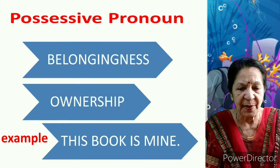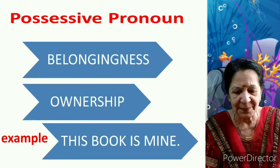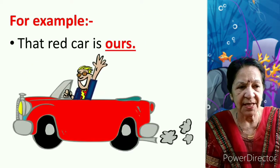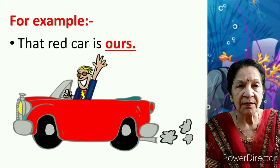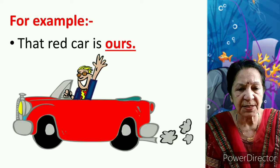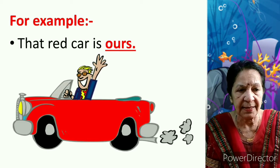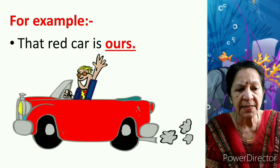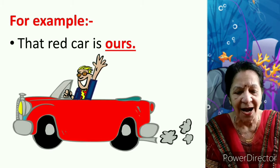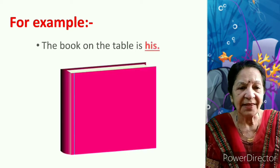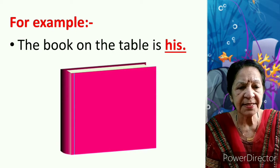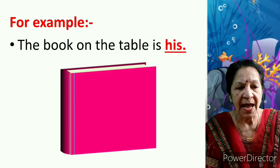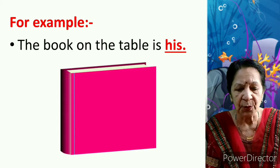We will understand it better with the help of examples. For example, 'That red car is ours.' Ours is a possessive pronoun as it indicates belongingness and ownership of the car. Another example: 'The book on the table is his.' His is a possessive pronoun as it indicates the ownership of the book.